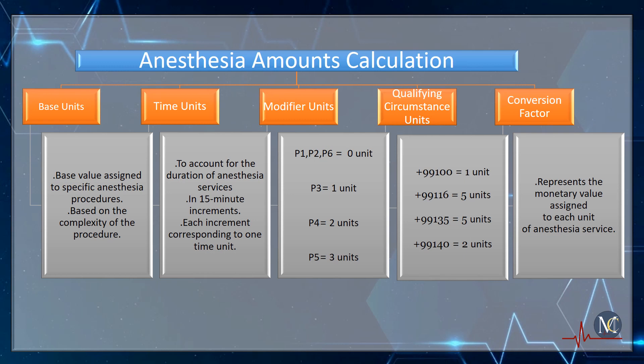Qualifying circumstance units are assigned when anesthesia service involves specific qualifying circumstances, such as emergency conditions or complex medical conditions. These qualifying circumstance units are used to adjust the anesthesia fee accordingly. Code 99100 has 1 unit value; codes 99116 and 99135 have 5 unit value; and code 99140 has 2 unit value.